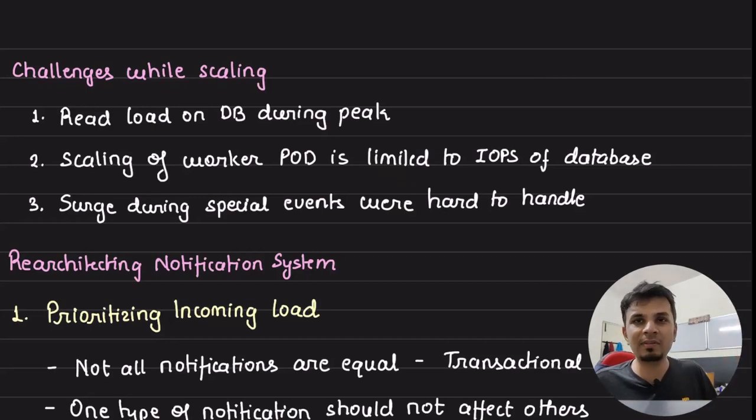Third problem with scaling is surge during special events. For example, during IPL matches, during festive seasons, during some year-end thing where a lot of people are making transactions. A lot of transactions go through Razorpay. This is where they see surges happening in their system. Handling them becomes a pain. These are the three key challenges that come with surges.